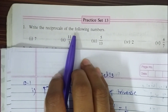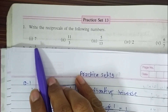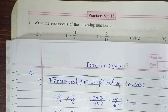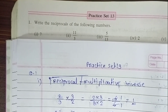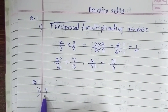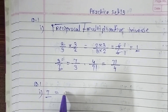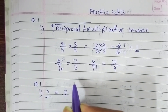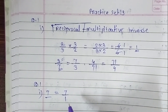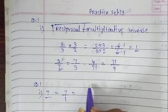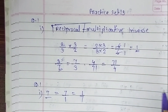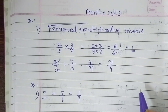Our first question is: write the reciprocals of the following numbers. The first sub-question is 7. Here there is no denominator — this is a whole number. Each and every whole number has the denominator 1. So we can write it as a fraction: 7 upon 1. When we get it as a fraction, we can easily write the reciprocal. The reciprocal is 1 upon 7. Remember, every whole number has the denominator 1.